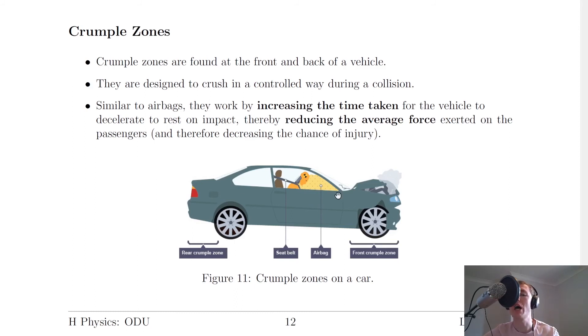And this picture quite nicely shows you how all three safety features work together. So you've got the seatbelt there, you've got the airbag, and then you've got the front and rear crumple zones. So all of these things are going to try and maximize your chances of survival in a car crash.